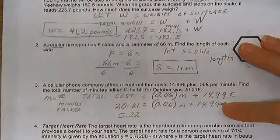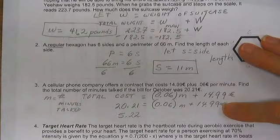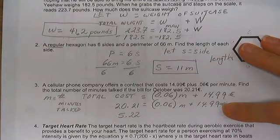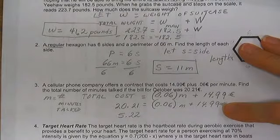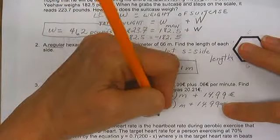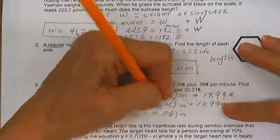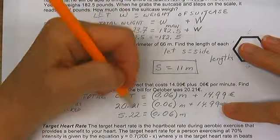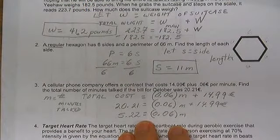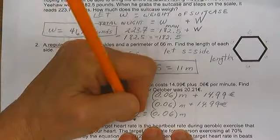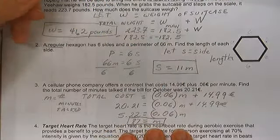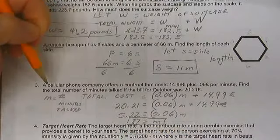So let me just check that. 20.21 minus 14.99. Sure enough, 5.22 equals 0.06 times the number of minutes. Divide both sides by 0.06, and 87 is equal to the number of minutes someone talked on this European cell plan.